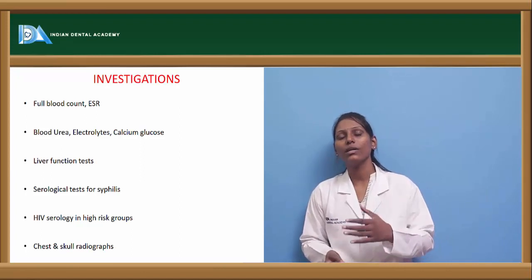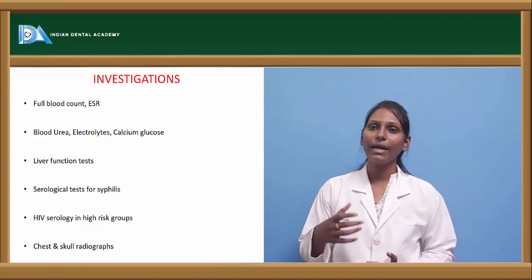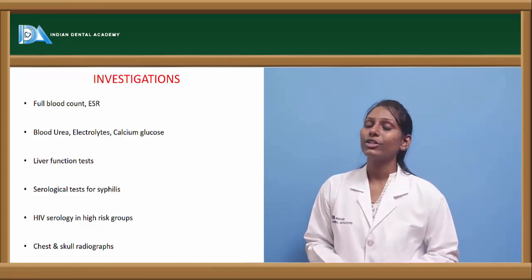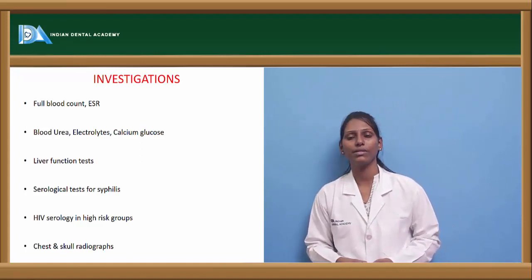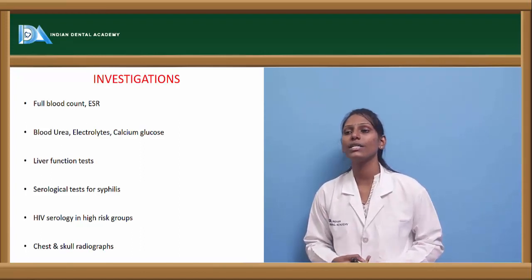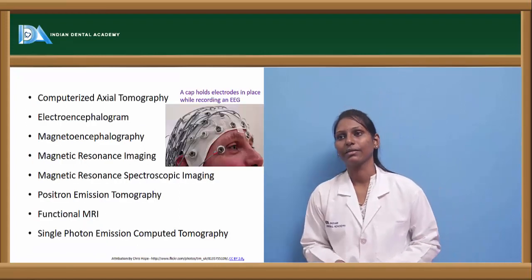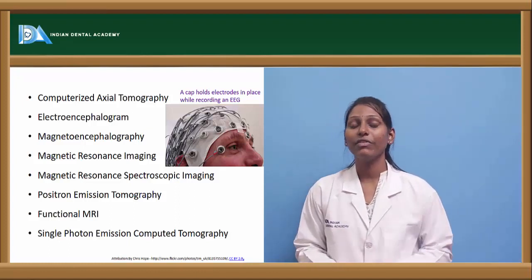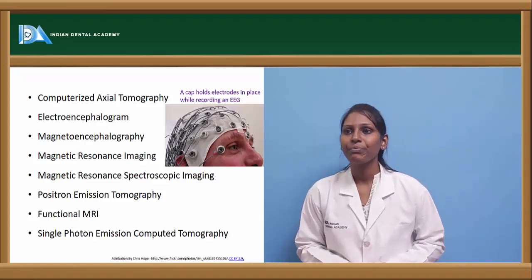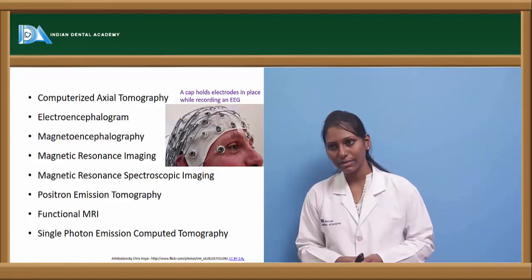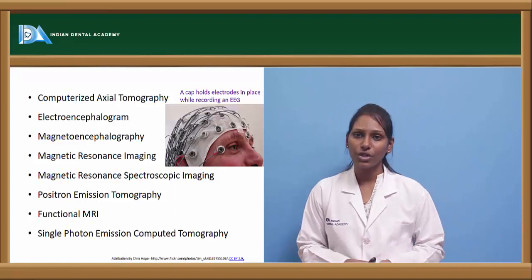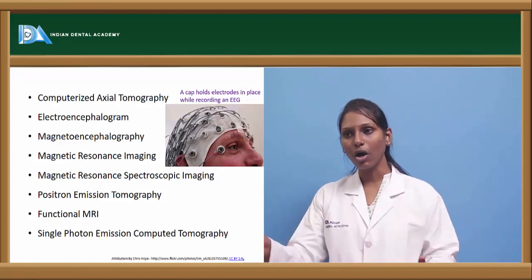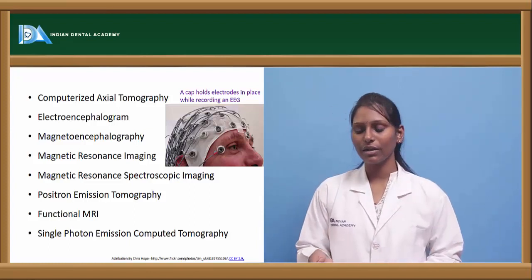Various investigations help in diagnosing epilepsy, including full blood count, ESR, blood urea, electrolytes, calcium, glucose, and liver function tests. Serology tests for syphilis, HIV serology in high-risk patients, and chest and skull radiographs are also taken. Recent advances include CT scan, electroencephalogram (EEG) — which is a very good diagnostic adjuvant — magnetoencephalography, MRI, magnetic resonance spectroscopic imaging, positron emission tomography, functional MRI, and single photon emission computed tomography. Above all, EEG gives good diagnostic details.